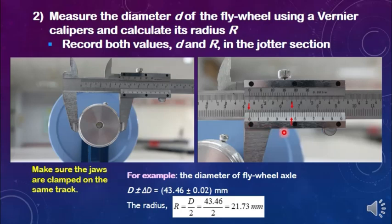Then we refer to this red arrow pointing at this line on the vernier scale. This line coincides with this line of the diameter of the axle of the flywheel. The diameter of the axle of the flywheel is the sum of the reading of the main scale and the reading of the vernier scale. So 43 mm plus 0.46 mm gives us the diameter of the axle as 43.46 mm and the uncertainty of these vernier calipers is 0.02.